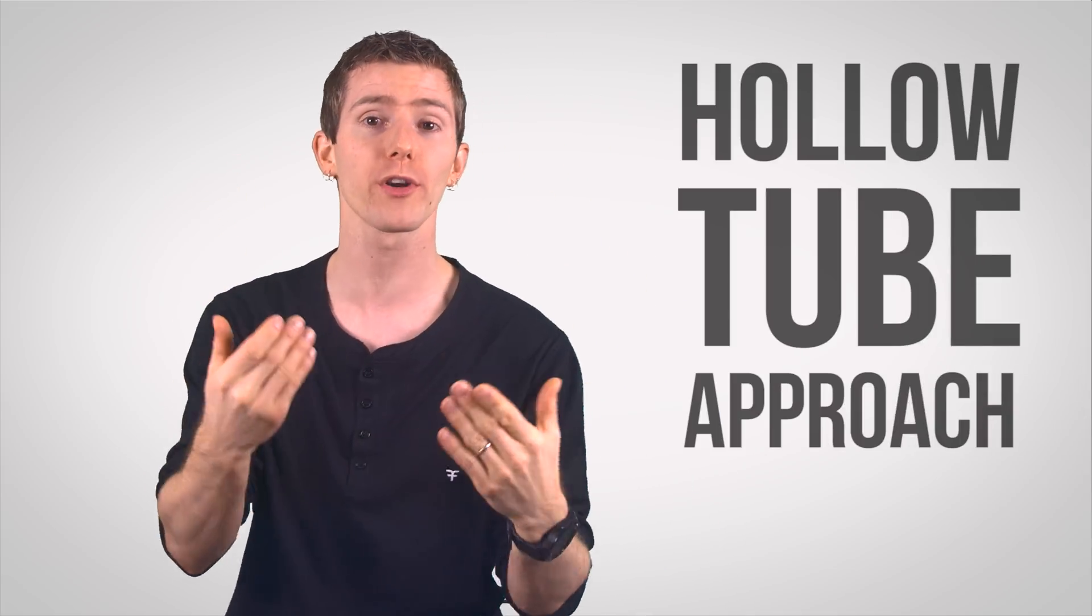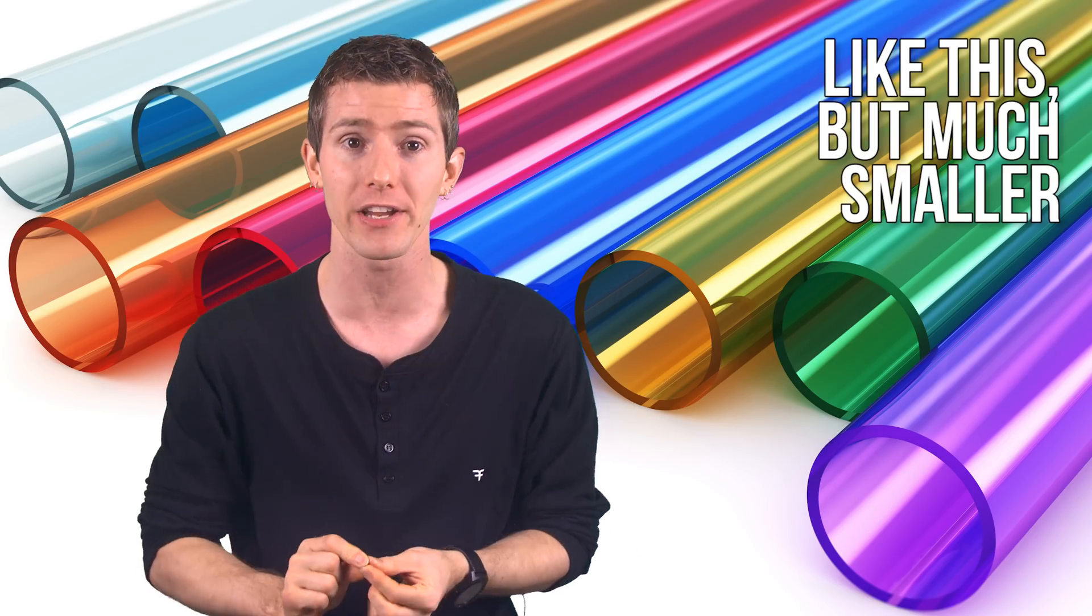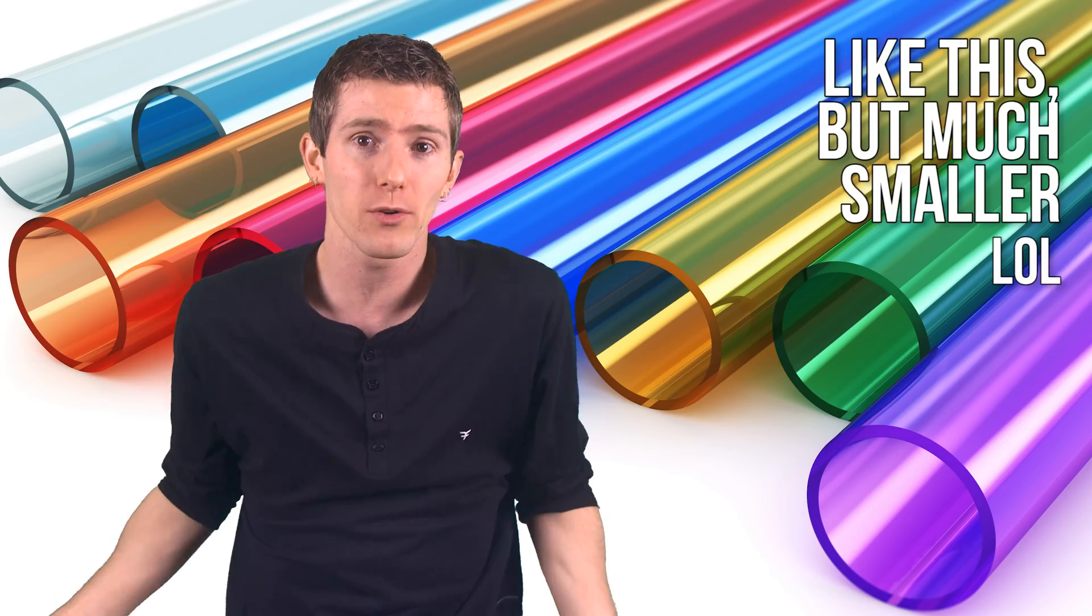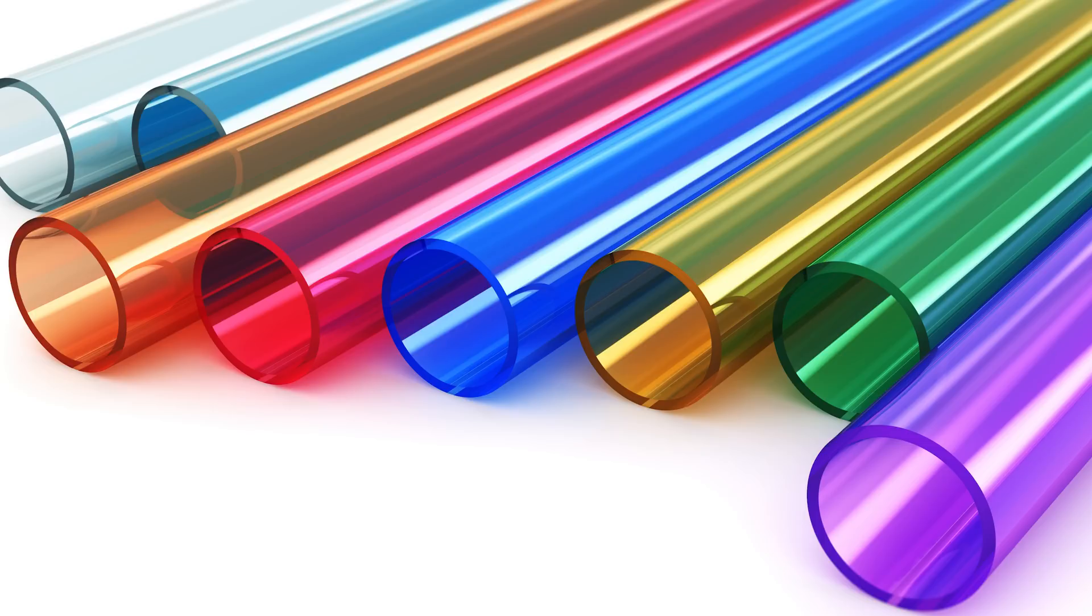The first method, aptly named the hollow tube approach, works by utilizing a network of tiny glass or fiber capillaries that are often used already as a way of reinforcing the tensile strength of plastic polymers.